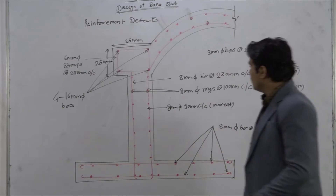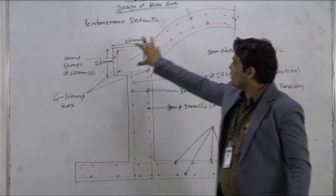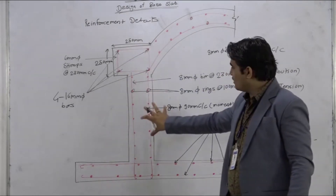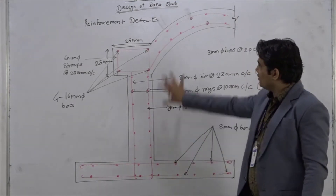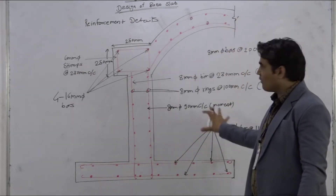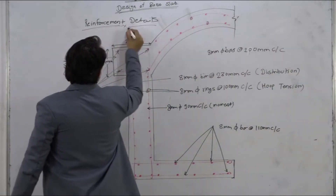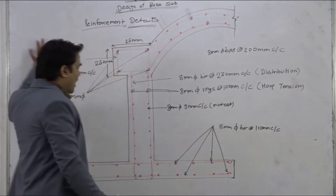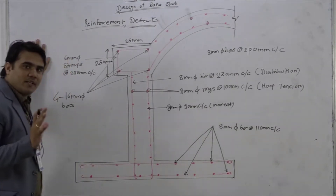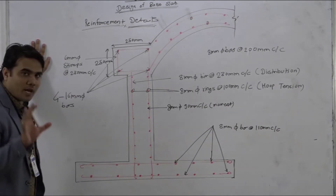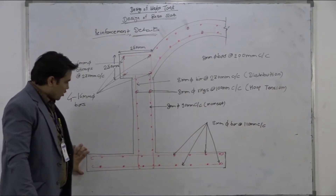In this numerical we have designed the dome, then the ring beams, then the circular walls of the tank, and finally the base slab. This is the typical cross-section of the water tank where I am showing you the reinforcement details. This reinforcement detail is a very important and critical step — it grabs all the attention of the examiner.